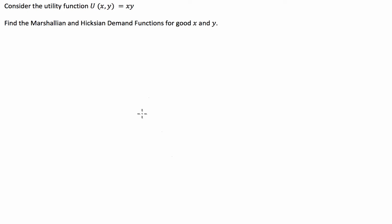G'day guys, I've got a microeconomics question for you today where we've been asked to consider a utility function and using the utility function we've got to find the Marshallian and Hicksian demand functions for good X and Y. We have to derive the Marshallian or uncompensated demand functions for X and Y and the Hicksian, which are the compensated demand functions for these two goods X and Y.